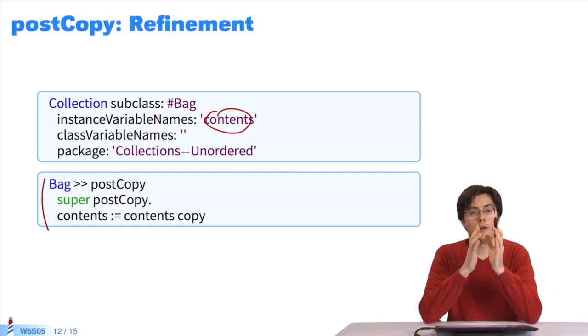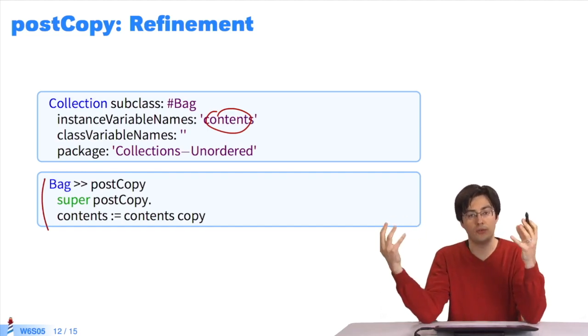And the designers of the bag class decided that when you copy a bag, you don't want to share the contents variable. You want separate variables. They have the same initial value, but you can modify only one.